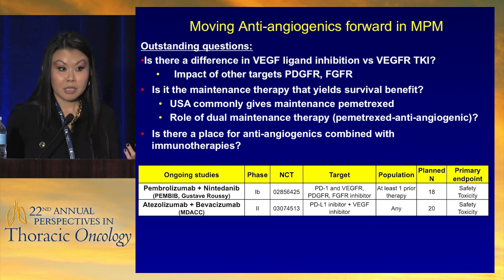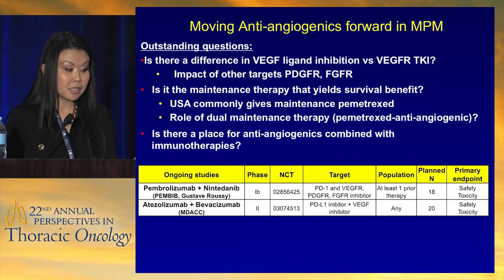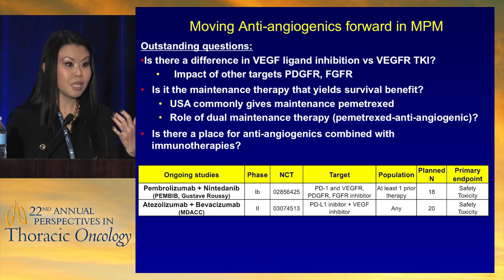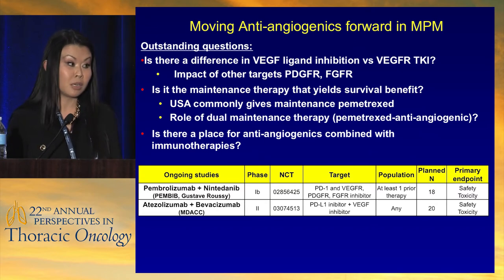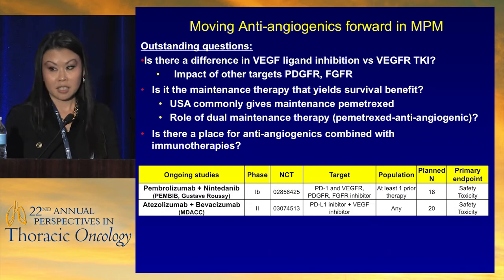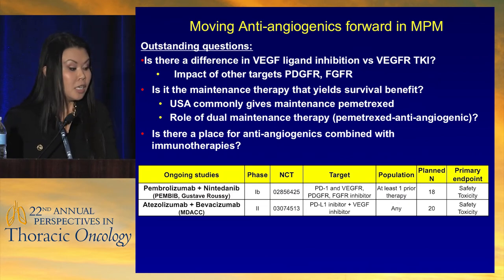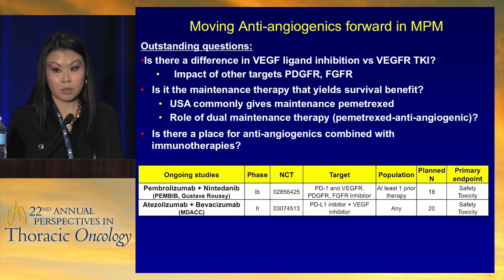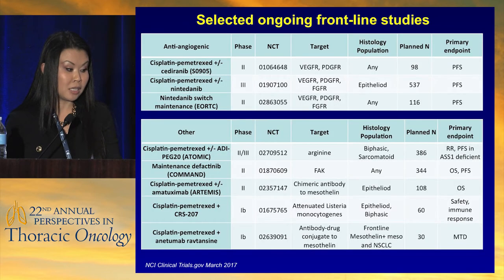We don't yet know whether bevacizumab will differ from oral VEGFR TKIs. Another drug, cediranib, is being put forward by SWOG targeting VEGFR and PDGFR. There's also a question about whether it's the maintenance effect driving the survival benefit — and whether maintenance pemetrexed alone would show similar data. Maintenance pemetrexed is not FDA-approved in mesothelioma, though some clinicians do give it in patients not on protocol and have obtained coverage. There's also the question of whether combining anti-angiogenics with immunotherapies could yield even better outcomes, and several studies worldwide are investigating that combination.